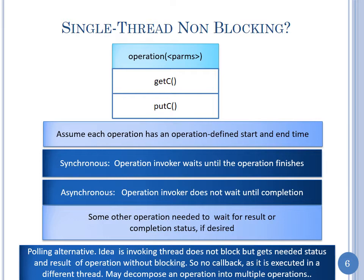If necessary we can decompose our operations into multiple operations. We are going to do what was mentioned earlier — start doing polling. Because we don't have callbacks, we're going to poll and reuse the same thread to get status and completion information. Polling is bad, but we're going to do it as an intermediate step toward doing the right thing. Let's assume for now polling is fine.